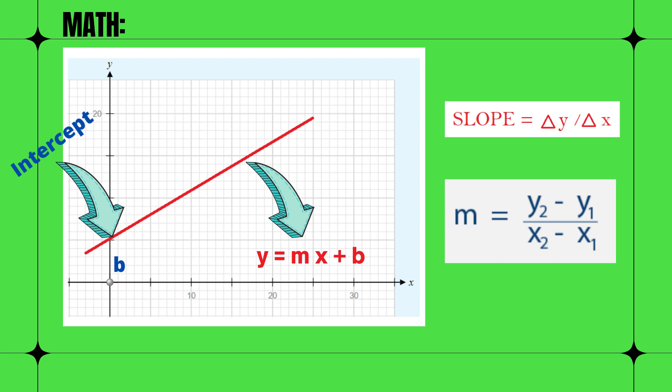The letter b is used for the y-intercept. It is the point at which the line crosses the vertical axis. Slope is a measure of the steepness of the graph line, not in terms of angle, but rather in terms of the units along the horizontal and vertical axis.